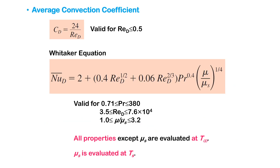For spherical coordinates, the drag coefficient can be calculated by 24 over Reynolds number when the flow is laminar. And if you would like to calculate the average convective heat transfer coefficient, we have one equation available to us. This equation is called the Whitaker equation, and it is a function of Reynolds number, Prandtl number, and viscosity.